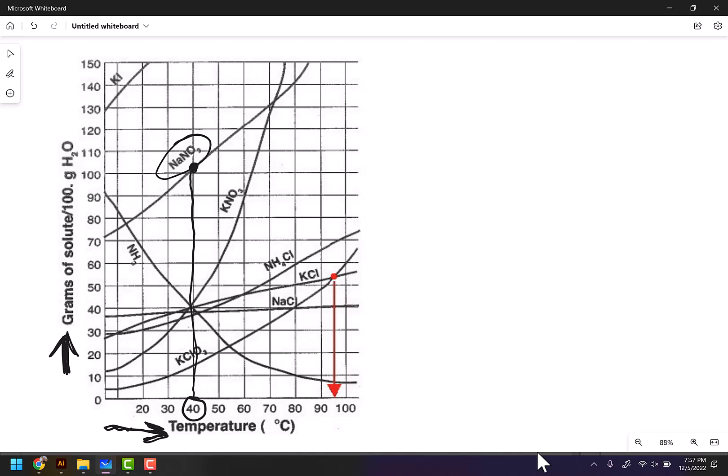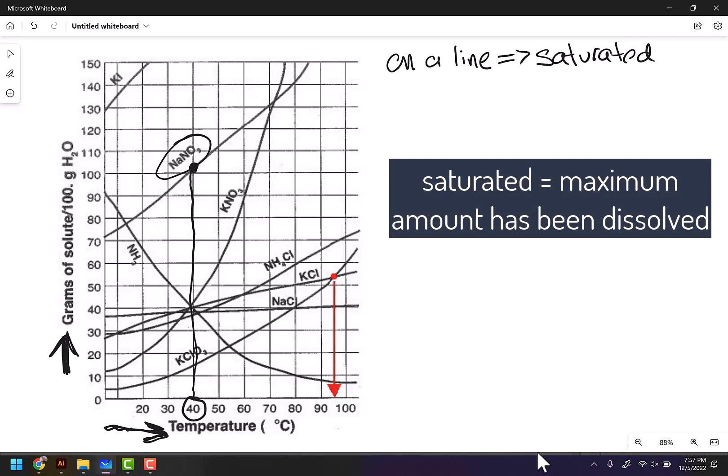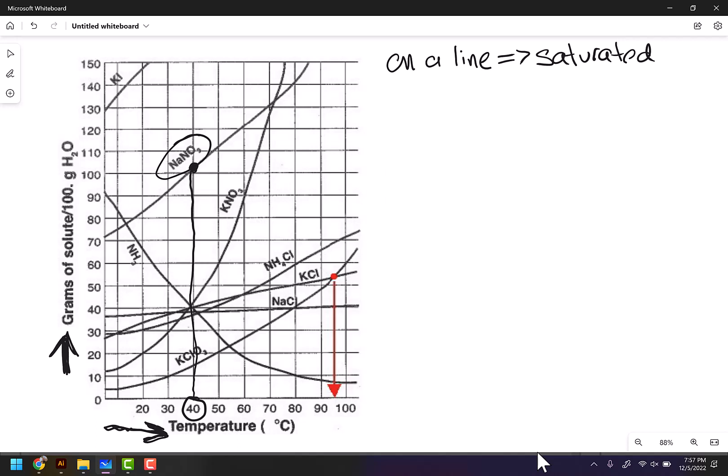Now, if you have a point on a line, you are what are called saturated. Saturated means the maximum amount of that substance has been dissolved in that amount of liquid. So the maximum amount of sodium nitrate that can dissolve at 40 degrees Celsius is about 103 grams in 100 milliliters of water.